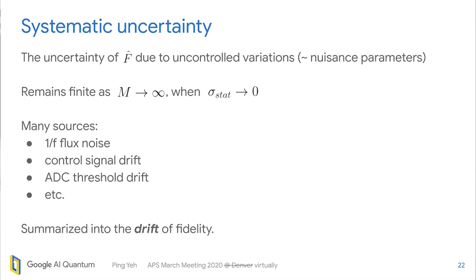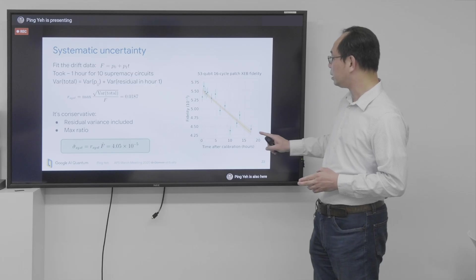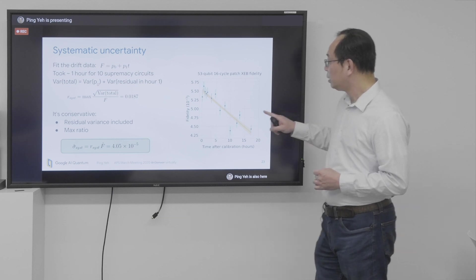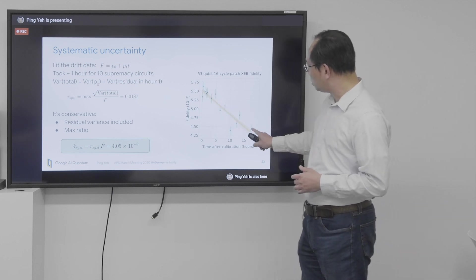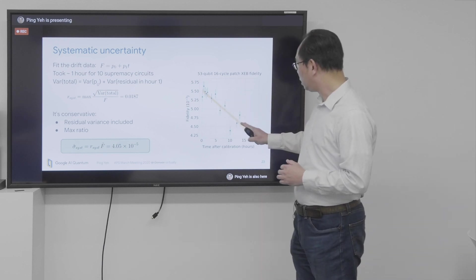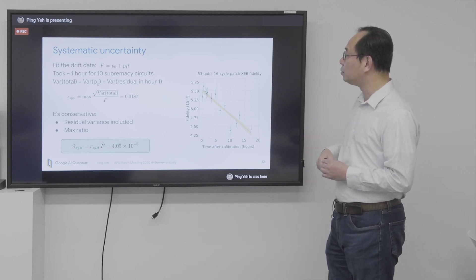And then the next is systematic uncertainty. So there are many, many sources of uncertainty here. And they are captured in one big number, which is the drift. So how fidelity drifts with time after calibration. And here we took data for 17 hours on the same random circuit. And we found out it drops down. Not too much, but kind of visibly. Within this range, I think the linear fit seems to be working OK. So we use a linear fit.